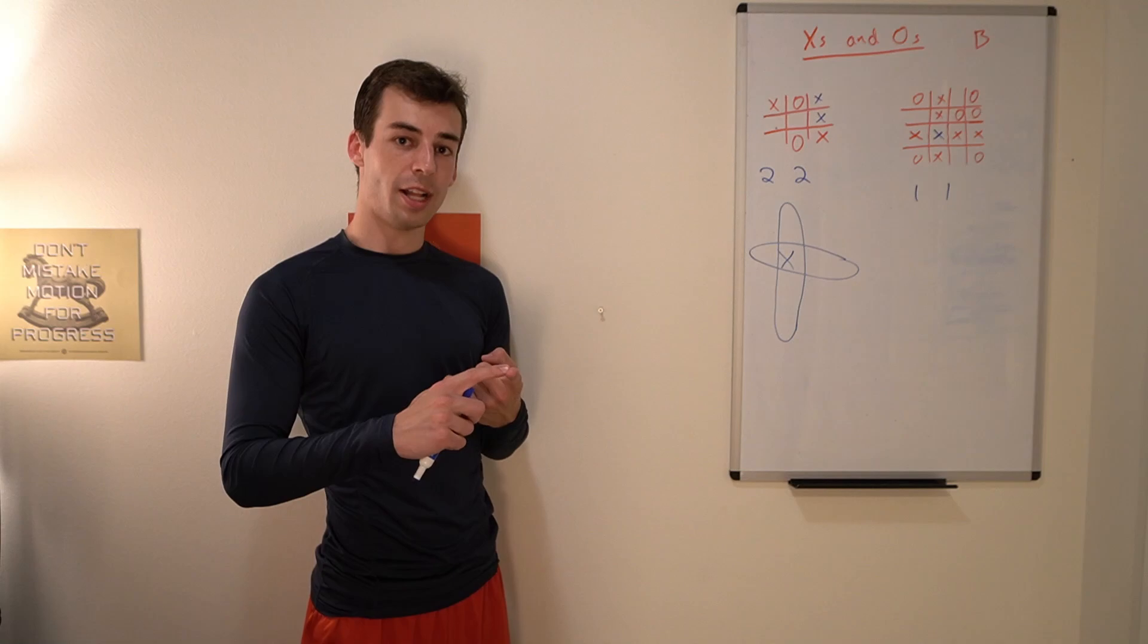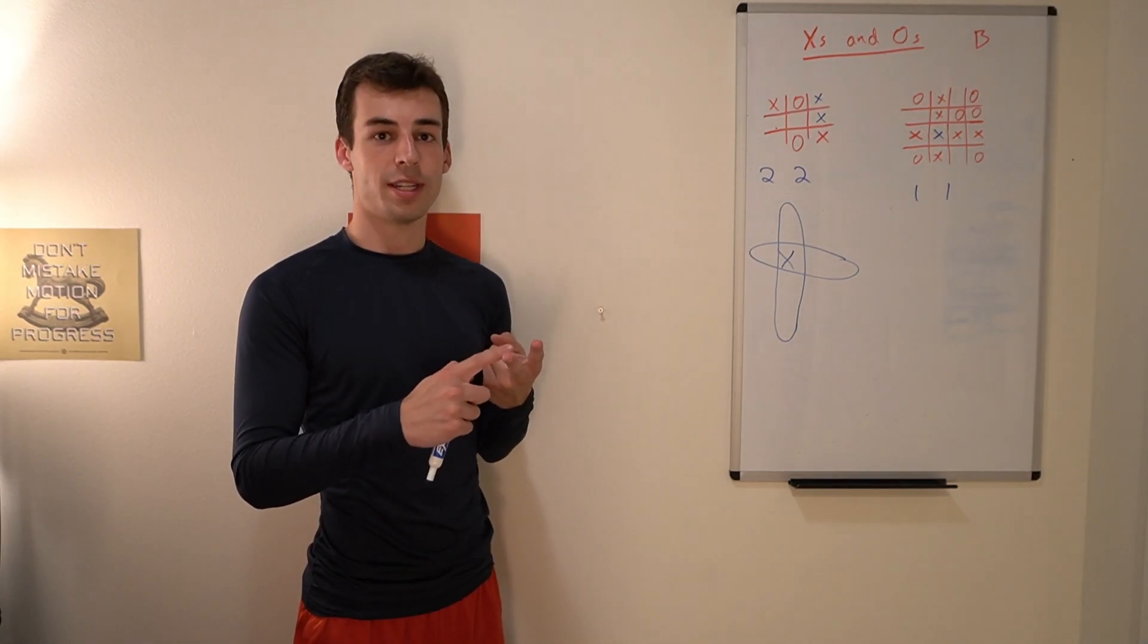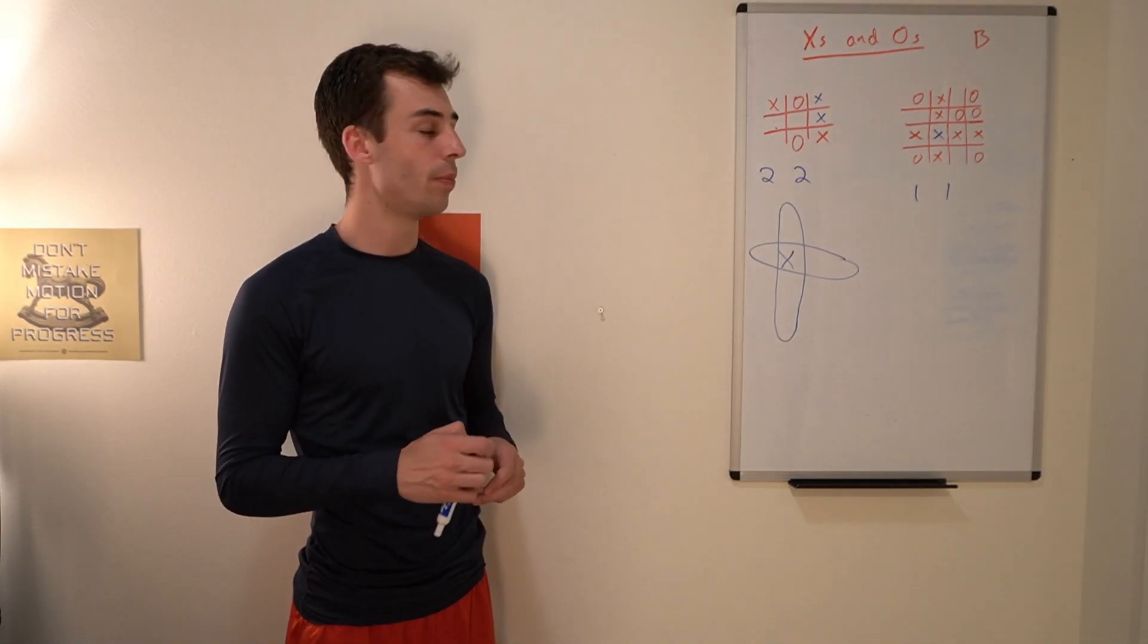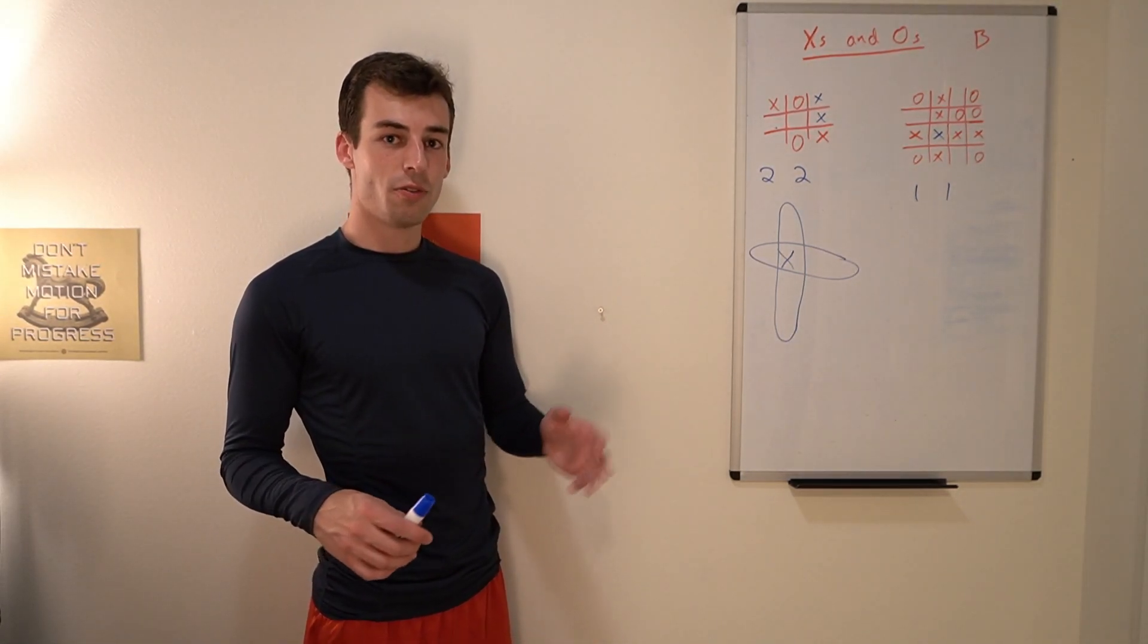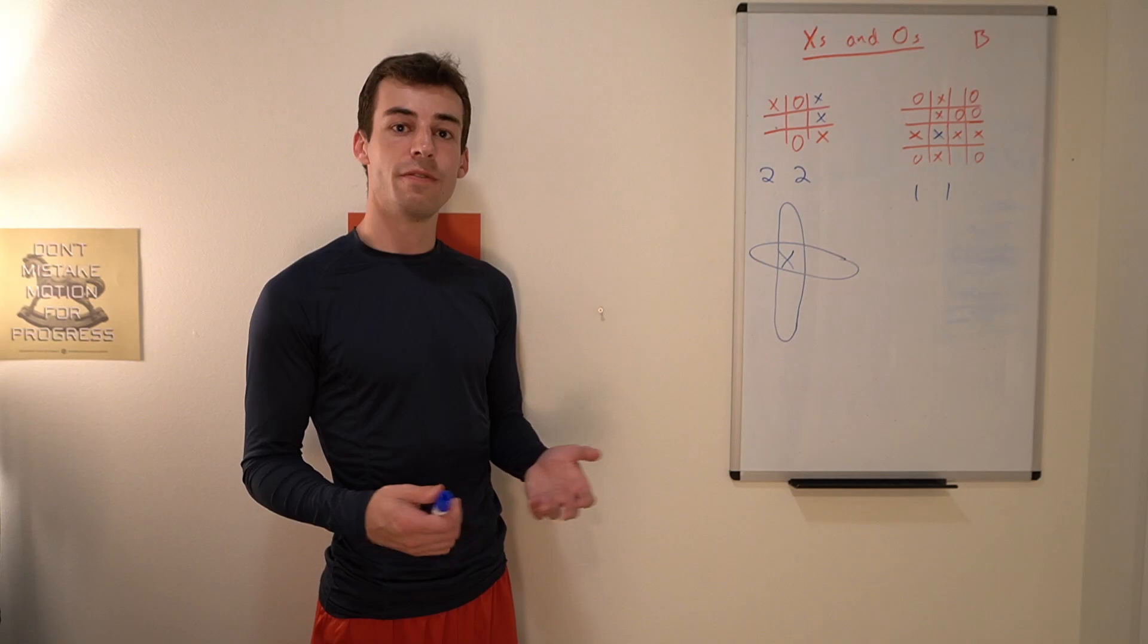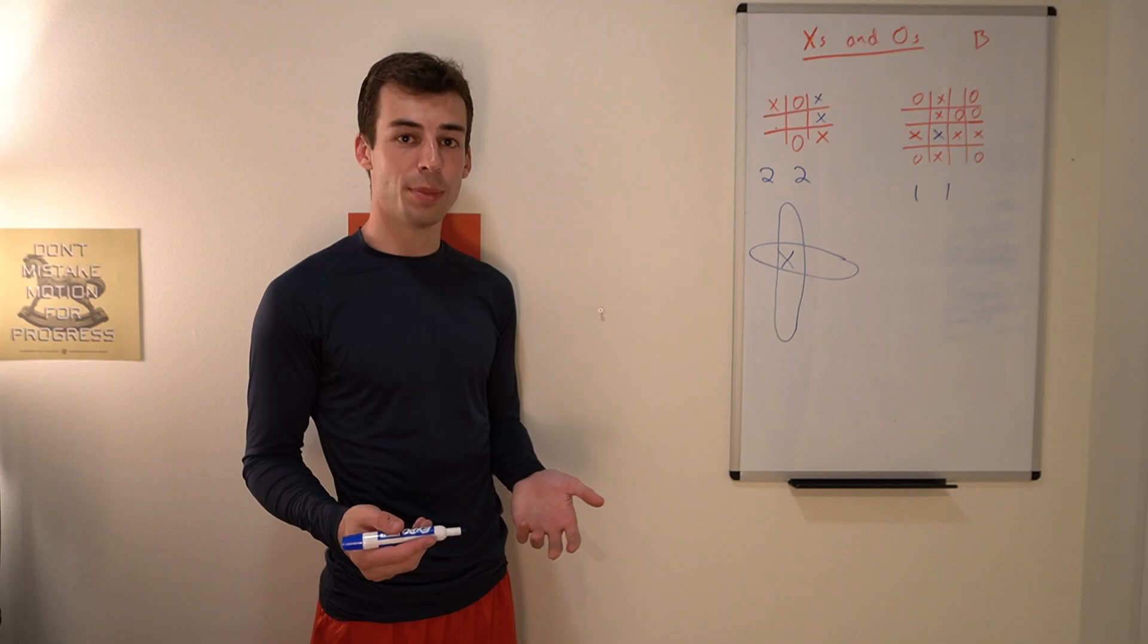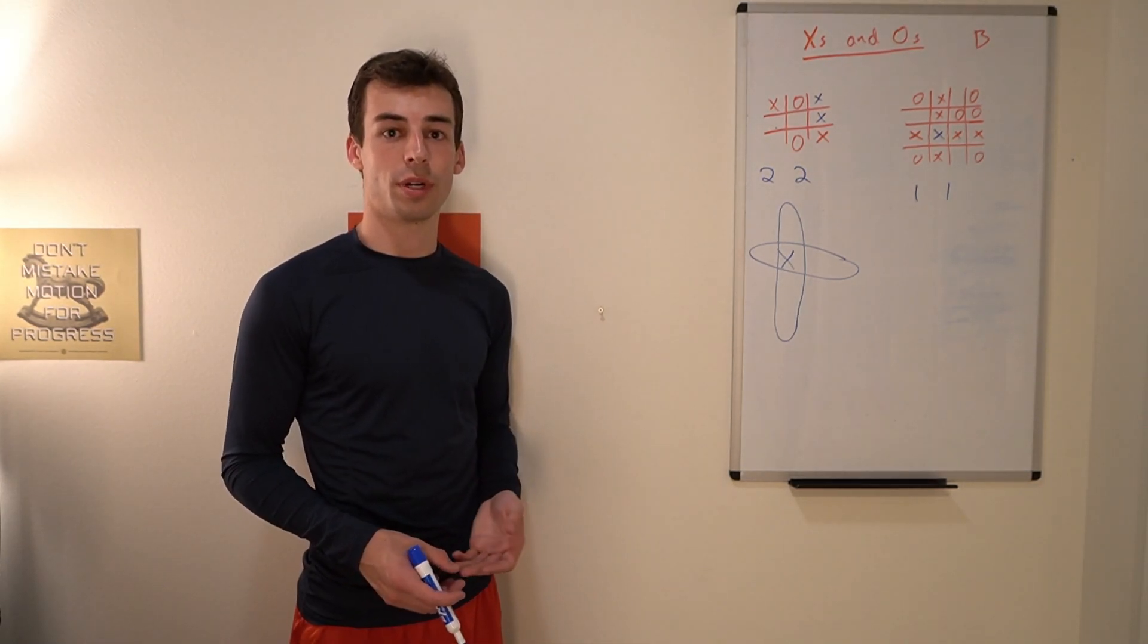So we can keep track of, for each row and column, are there any dots and are there any O's? If there are dots, how many dots are there? Then we can check for each row and each column, what's the fewest number of dots that we would need, or what's the fewest number of X's we would need to place in order to win for that row or column.